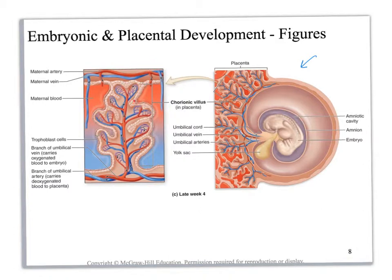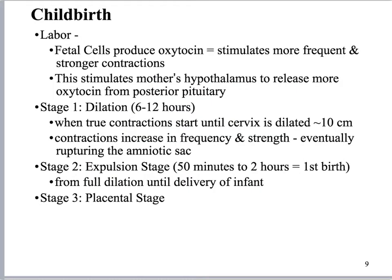This is really important because we need oxygen, gases, and nutrients to go back and forth. But we do not want the mother's antibodies or the baby's antigens mixing, because they will attack each other. The embryo is a different organism — it is not the same organism as the mother — and so the mother's body will attack it like it's a parasite.